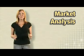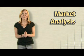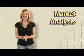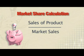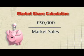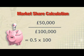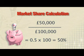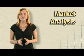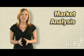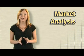Had a go? Your calculation would look like this. Product A sales go on top, so £50,000, divided by total sales of £100,000, multiplied by 100, gives an answer of 50%.